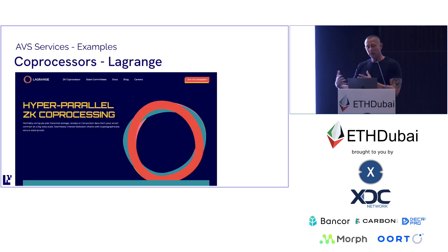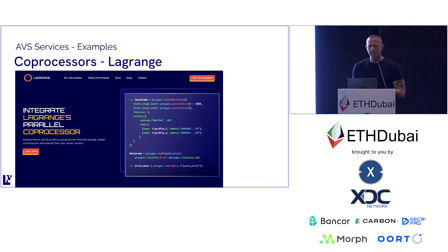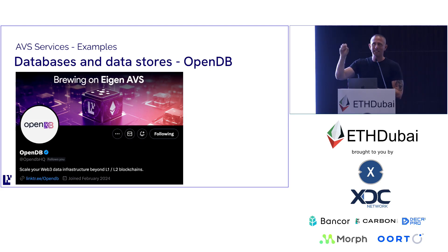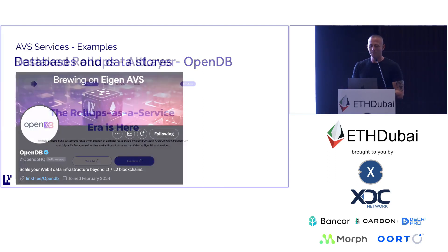Another new category doing really well is coprocessors. Lagrange is a great example — they are a ZK coprocessor. You can offload computationally expensive tasks off-chain and do off-chain computation similar to what an Oracle might provide today. People are also building databases and data stores — IPFS pinning services, Arweave-like protocols. OpenDB is building a verified SQL database on top of Eigenlayer with three products: an archival node type for EigenDA, a vector DB product for AI applications, and a traditional SQL API.